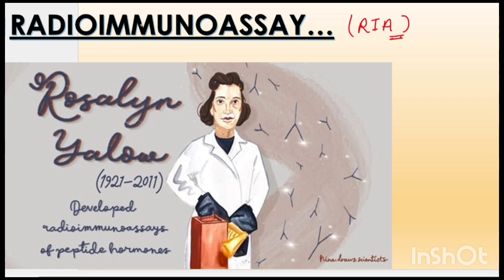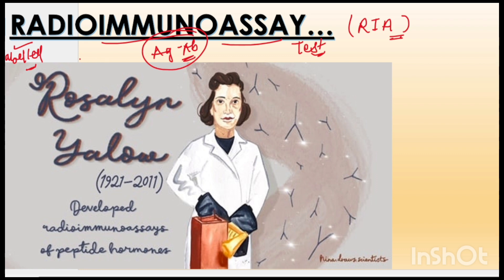Radio Immunoassay - in abbreviated form is known as RIA. If we see the terms, antigen-antibody complex reaction, we can say it is immunity-related, involving antibodies. Something is radio-labeled here - radio-labeled means radioactively labeled. 'Radio' here is used to denote the radioactive labeling of antigen and antibody.